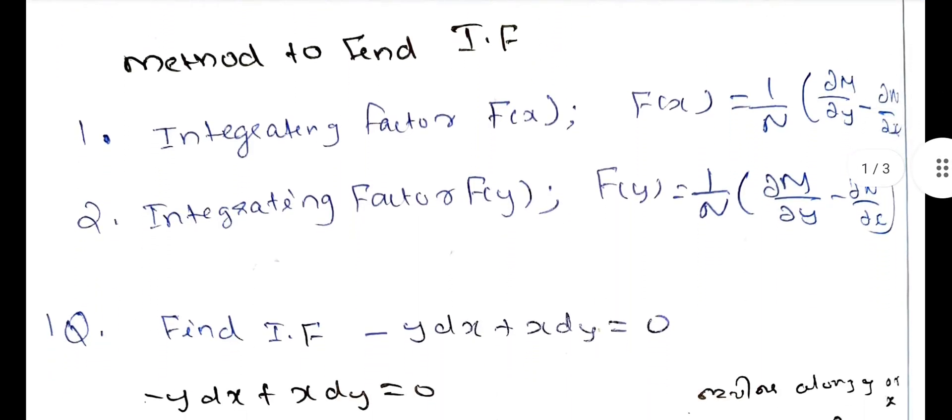The method of finding the Integrating Factor uses f(x) or f(y). f(x) is equal to 1/N times (dM/dy minus dN/dx). If this expression is a function of x alone, then we can find the integrating factor.